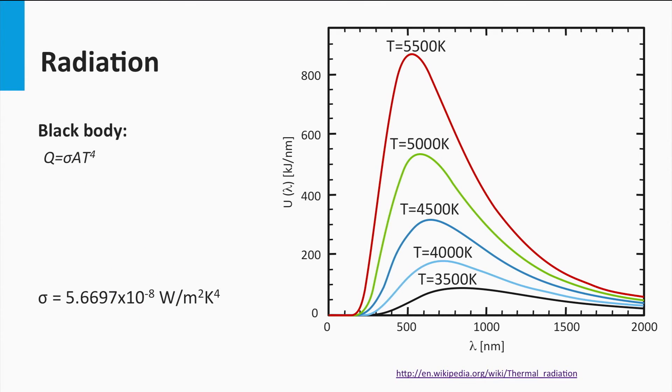Planck's law describes the electromagnetic radiation at a certain temperature in any medium as a function of wavelength, as shown in this graph. By integrating Planck's law over all wavelengths, it gives the total energy emitted per unit of area by the formula given here. Where sigma is the Stefan-Boltzmann constant and T is the temperature of the body in Kelvin.